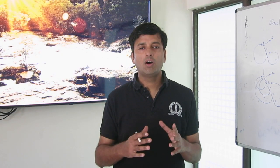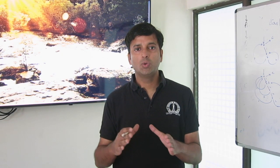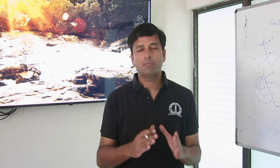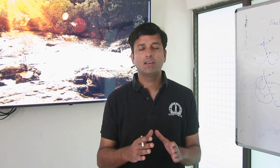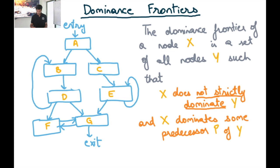We've been talking about how a program can be converted to SSA form. One of the primary ideas is the computation of dominance frontiers towards the conversion of a program to minimal SSA, which is the minimum number of phi nodes. So I'm going to define what a dominance frontier means.